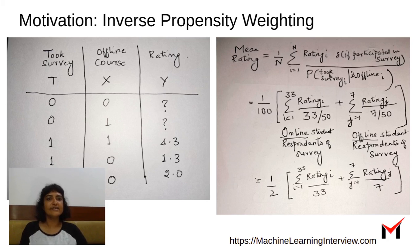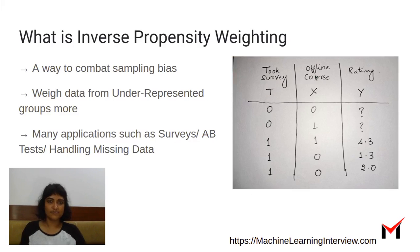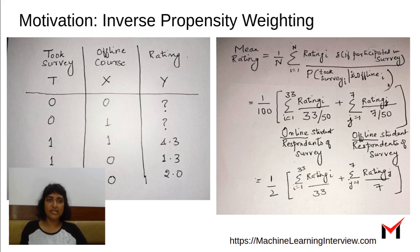But overall, the whole idea here is to do this ratio in such a way that we are giving more weightage to the underrepresented groups. So sometimes it's not as simple to compute this denominator, which is the weightage. So here it is very simple to come up with this 33 by 50, 7 by 50 and so on, because we have all the numbers, how many people took the course, how many people took the survey, how many people did it online, how many people did it offline.